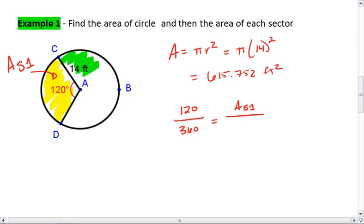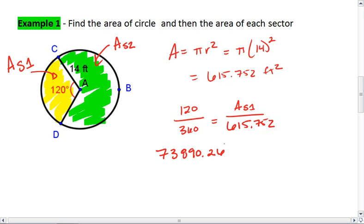We'll say that this area over here, which I'm highlighting in green, we'll say this is the area of sector 2. So the area of sector 1 over the total area of the circle, which is 615.752. Cross multiply, so it's 615.752 times 120 gives me 73890.26 equals the area of sector 1 times 360. To solve for the area of sector 1, I divide both sides by 360. So I get that the area is 205.251, and that is feet squared.